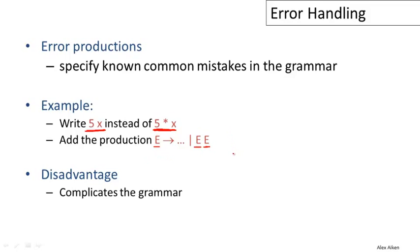Essentially, error productions promote common mistakes to alternative syntax. But this is used in practice — when you use GCC and other production C compilers, they will often warn you about things you're not supposed to do but accept them anyway. This is essentially the mechanism by which they do that.